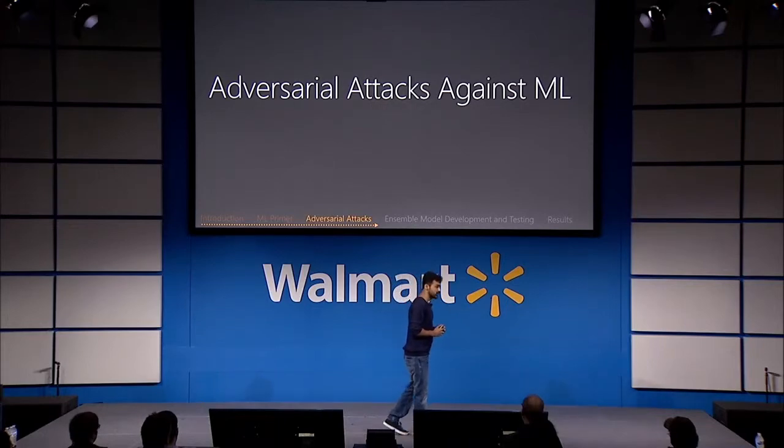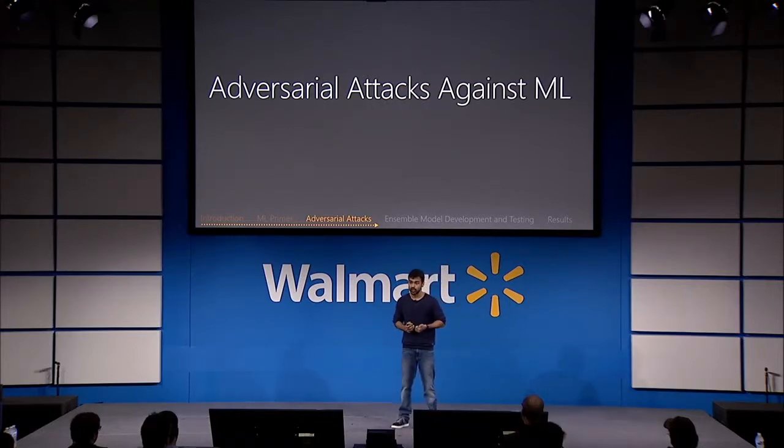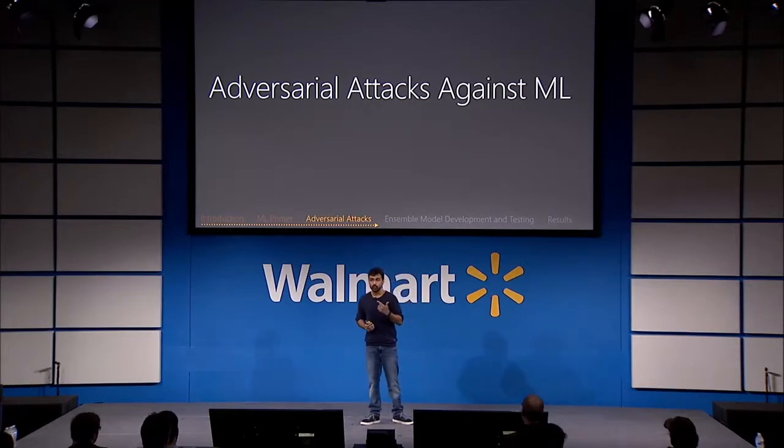When it comes to adversarial attacks against machine learning, there are four primary categories. The first is model inversion, where the attacker guesses the private features used to train your model by crafting special queries. The second is membership inference, where the attacker finds out if certain attributes were used to train your model. The third is targeted misclassification, where the attacker crafts specialized queries to cause unintended predictions. And fourth, poisoning attacks, where the attacker pollutes your telemetry to fool your models. This talk will primarily focus on poisoning attacks and targeted misclassification.